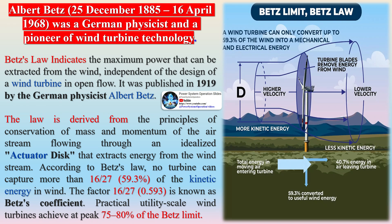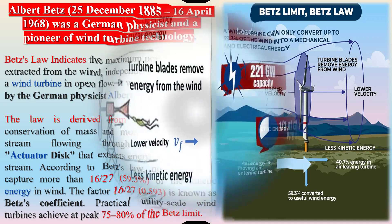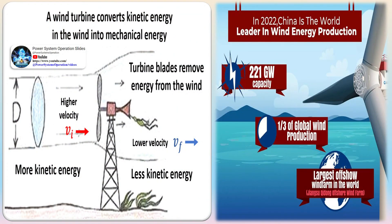The law is derived from the principles of conservation of mass and momentum of the airstream flowing through an idealized actuator disk that extracts energy from the wind stream. According to Betz's law, no turbine can capture more than 16/27 (59.3%) of the kinetic energy in wind. The factor 16/27 (0.593) is known as Betz's coefficient. Practical utility-scale wind turbines achieve at peak 75 to 80% of the Betz limit.